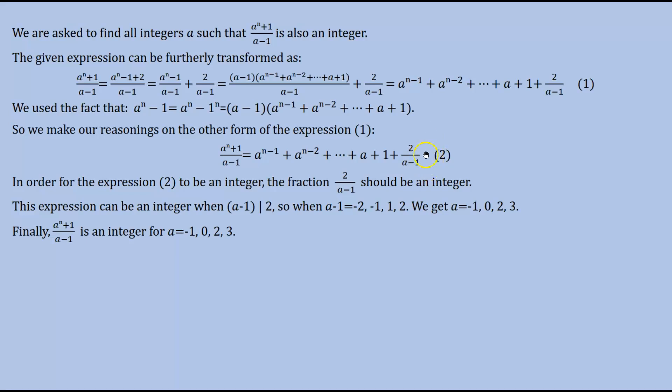The only possible way for this to be an integer is when (a-1) is a divisor of 2, so (a-1) equals -2, -1, 1, or 2. By substituting these values we get that a equals -1, 0, 2, and 3.